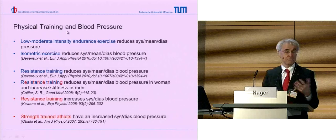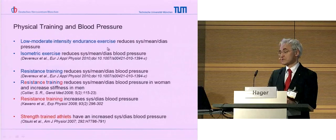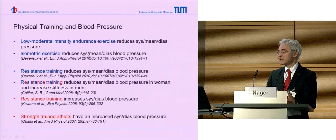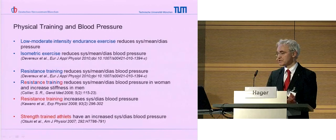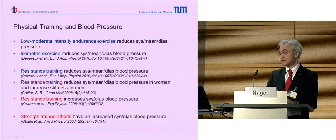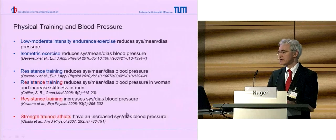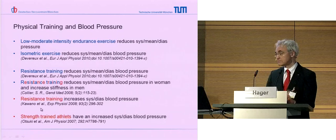First, physical training and blood pressure - the big issue in coarctation. Low and moderate intensity endurance training reduces systolic, mean, and diastolic pressure. Isometric exercise also reduces systolic and diastolic blood pressure. Resistance training reduces systolic, diastolic, and mean blood pressure in one study; another study showed resistance training reduces blood pressure in women but increases aortic stiffness in men. Another study showed resistance training increases systolic and diastolic blood pressure. So we should be a little bit careful about strength training. Strength-trained athletes that are highly trained have an increased systolic and diastolic blood pressure - think about it.